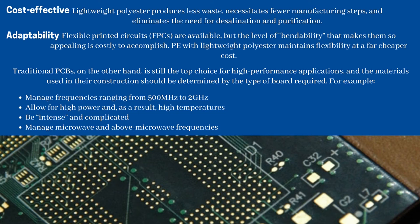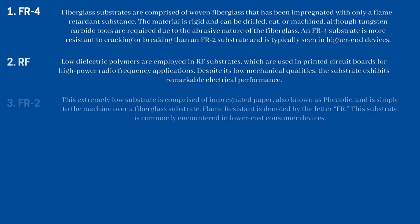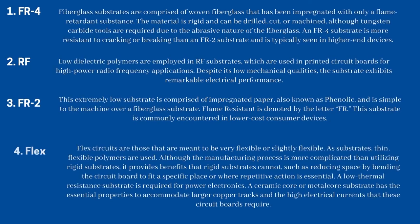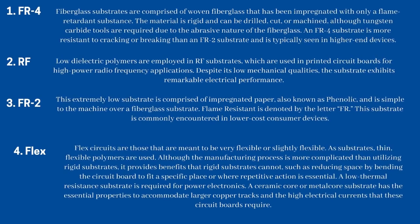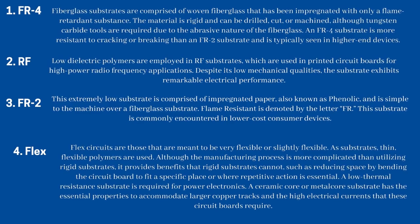Traditional PCBs are still the top choice for high-performance applications, and the materials used in their construction should be determined by the type of board required — for example, boards that manage frequencies from 500 MHz to 2 GHz, allow for high power and high temperatures, or manage microwave and above-microwave frequencies. The board's application decides the substrates and laminates to utilize. There are five types of substrates, each with its own set of features for specialized purposes.